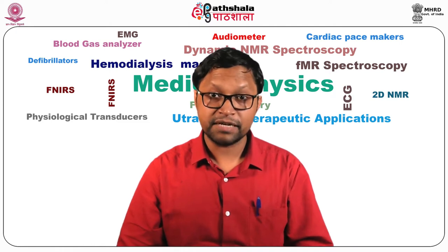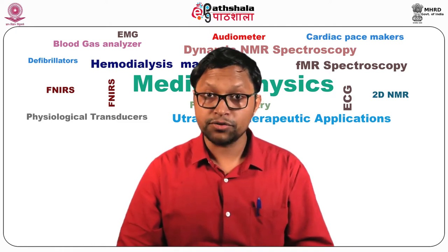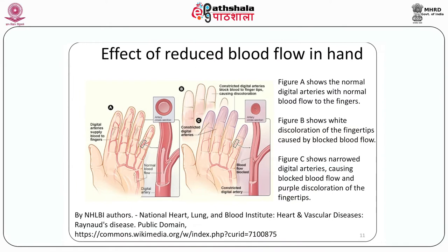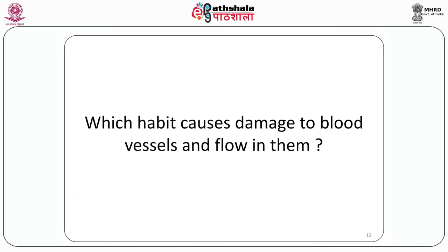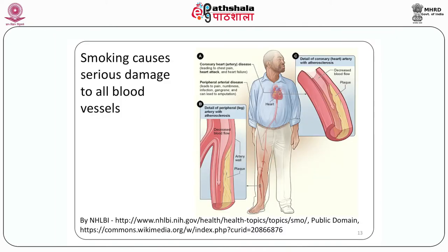What happened to the foot in the previous slide may also happen to hands. The hands, being a peripheral organ, may show a gradual loss of function, loss of normal colour, and necrosis. Here is a question: which habit causes damage to the blood vessels and decreased blood flow in them? Smoking is such a major insult to blood flow that it may result in all sorts of serious insults to vital organs and also to the peripheries.